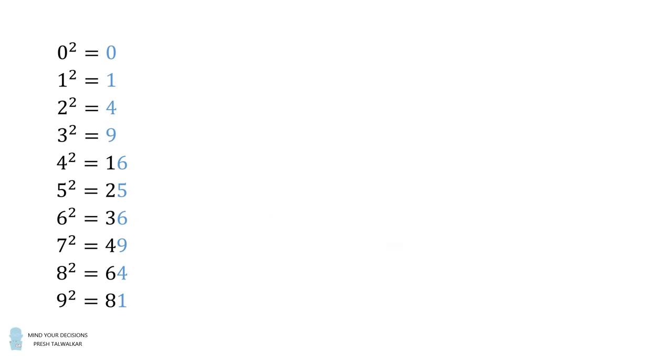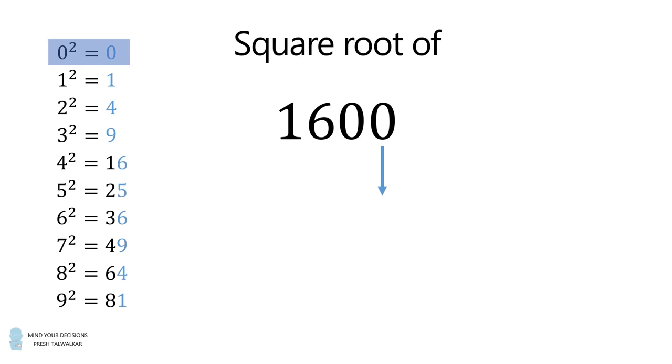I will illustrate the method with an example. Let's calculate the square root of 1600. First, look at the last digit of 1600. This is 0. So, you now want the square whose last digit ends in 0. There's only one option, which is 0 squared is equal to 0. So, we put a 0 over here.